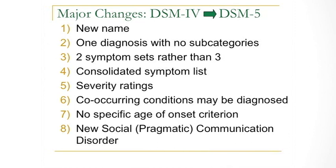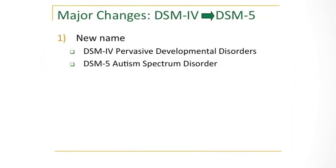Let's walk through the eight changes to the criteria. The first is a new name. It used to be called pervasive developmental disorders, and now it's called autism spectrum disorder. This is probably the least controversial change and highly welcome — it was already in very popular usage. Parents were already saying what a bad title the old name was, since it didn't make clear it had anything to do with autism. This change is very well embraced.